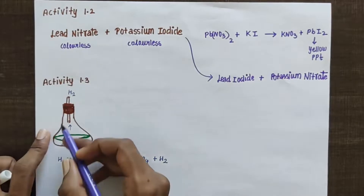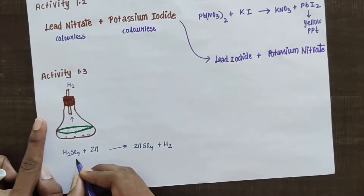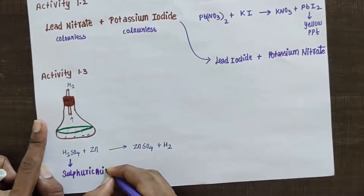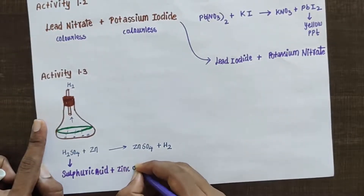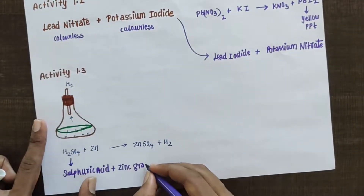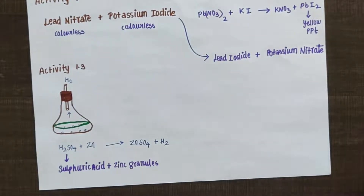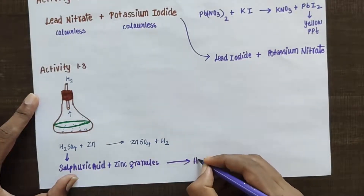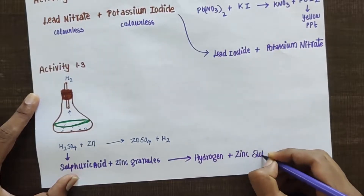Activity 1.3 is a very simple activity. You take a conical flask and add sulfuric acid — this is known as the king of chemicals. So you add sulfuric acid, then you are going to add zinc granules. You will be getting zinc sulfate and hydrogen gas as products. This is the reaction taking place in this activity.